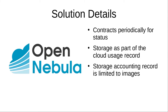Now it's time to take a closer look at the technical solution. We start with accounting data extraction — that is the beginning of GOAT. For OpenNebula, GOAT contacts the cloud manager periodically for the status of existing and recently deleted virtual machines. Cloud usage and public IP usage data are extracted from machine details. Storage related to existing virtual machines is reported as part of the cloud usage record. Only storage not related to any particular virtual machine is reported separately through storage accounting records. In the case of OpenNebula, this is limited to images in the image data stores.